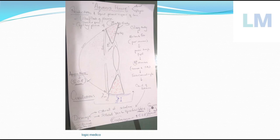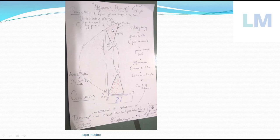Any liquid within our body is an ultrafiltrate of plasma. Aqueous humor is an ultrafiltrate of plasma from the capillaries present in the ciliary body, and it is also actively secreted by the ciliary body epithelium. It is produced in the area called the posterior chamber — the area between the iris and the lens.